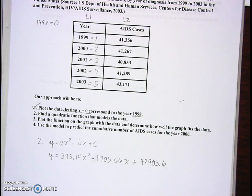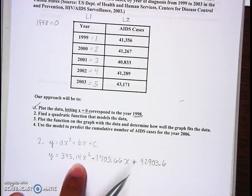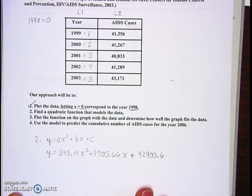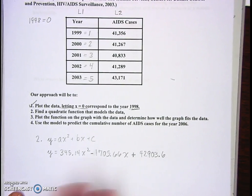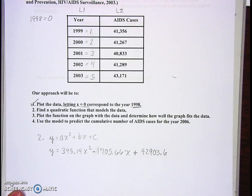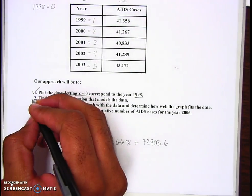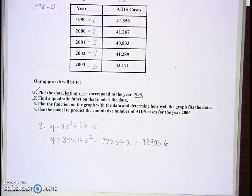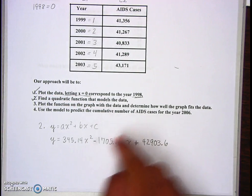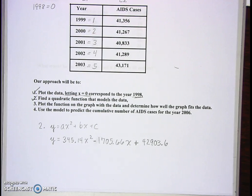We have y equals 345.14x squared minus 1705.66x plus 42903.6. Make sure you round correctly. If I say round to one decimal place or two decimal places, round it correctly. If it's not rounded correctly, the whole thing's wrong. That's our equation, that's number two. In the next video we're going to finish the rest - we'll do three and four.